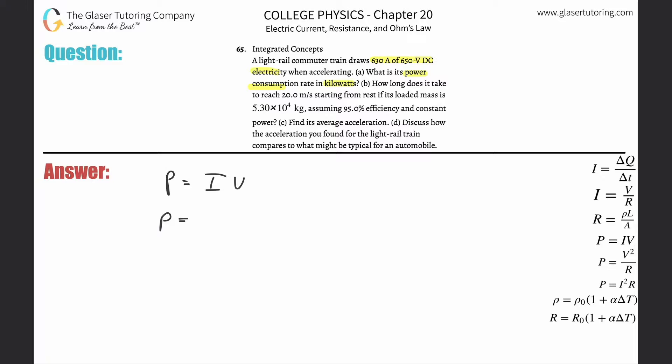They gave us the current and the voltage, so this is nice and easy. It's going to be 630 times 650. That's 4.10 times 10 to the fifth, in watts. You need it in kilowatts, so divide by a thousand.